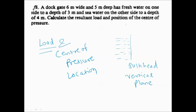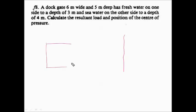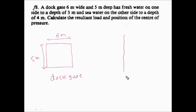In this numerical, we have a vertical plane and that vertical plane is a rectangular dock gate. The width of this dock gate is 6 meters and the depth is 5 meters. If you see this dock gate from the side, it will look like a single line.